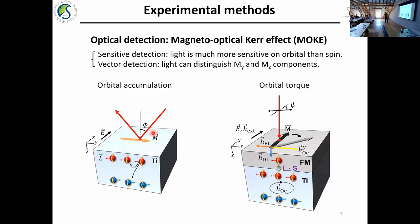The experimental method I use is the magneto-optical Kerr effect (MOKE) of current. It has certain advantages — for example, it is very sensitive, especially for this spin-orbit coupling material. Light is much more sensitive to orbital than to spin. Another advantage is that light can distinguish the direction of the magnetization: it can detect out-of-plane magnetization and also distinguish in-plane components. Using this technique, I measured single titanium and measured the orbital accumulation on the surface using MOKE to measure the orbital.